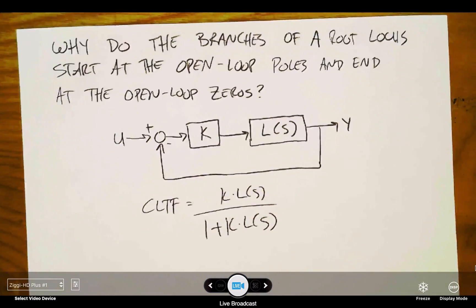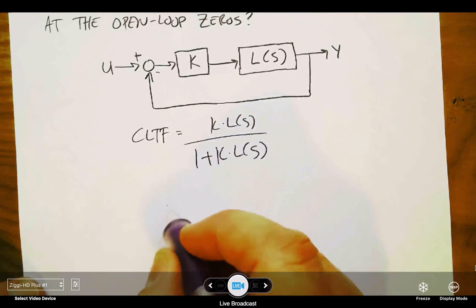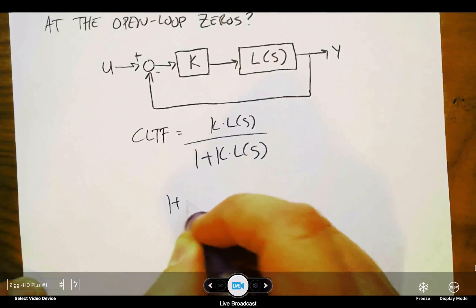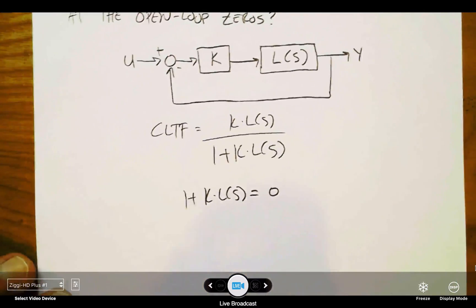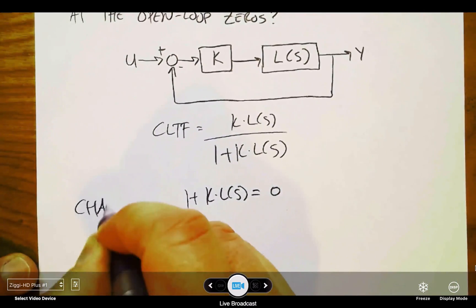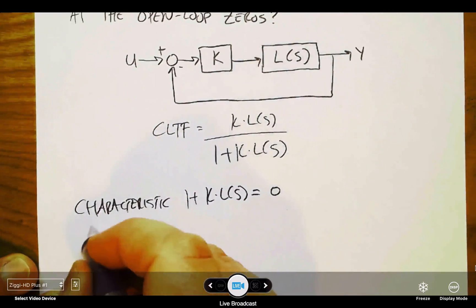The key thing to keep in mind is that a Root Locus is nothing more than a graphical solution to the characteristic equation. When we say characteristic equation, we mean take the denominator of a transfer function and set it equal to zero so that the roots of the characteristic equation are the poles of the system.